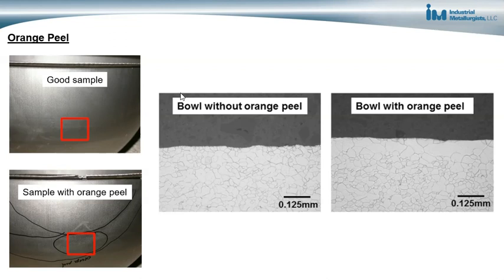I got samples of a good bowl and a bad bowl — one without orange peel and one with. Metallurgists know that orange peel is related to grain size: the larger the grains, the greater the chance that a deformed metal will have orange peel. We looked at the grain structure of both samples and found that the good sample had small, uniform grains through the thickness, whereas the bowl with orange peel had large grains at the top surface and small grains below.